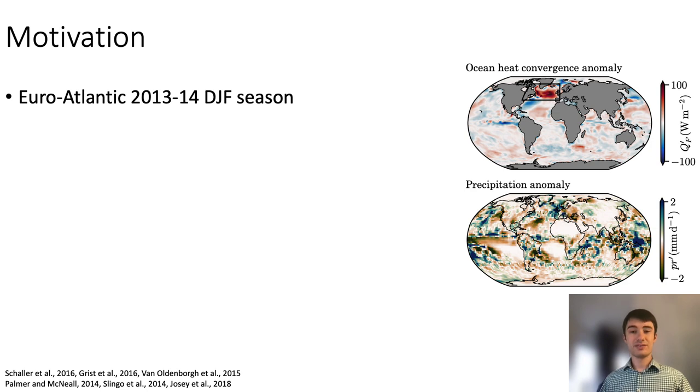The 2013-14 winter season was quite anomalous in the Euro-Atlantic region. I am showing two examples of this on the right. On the top, the ocean heat convergence anomaly integrated over the top 50 meters. The strong anomaly in the North Atlantic is immediately apparent. On the bottom, the precipitation anomaly. One can see the strong wet bias over Western Europe, in particular the UK.